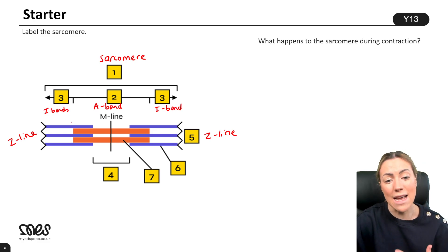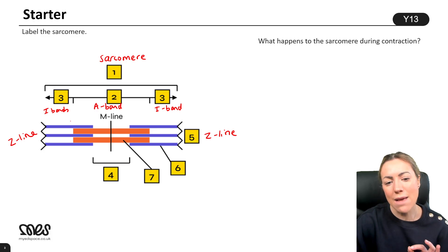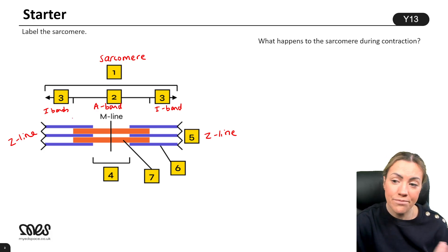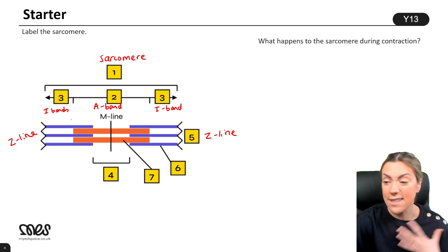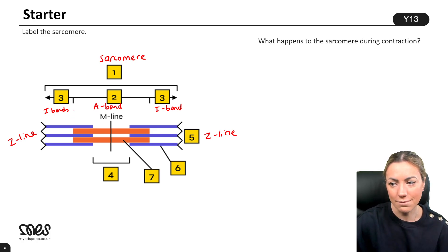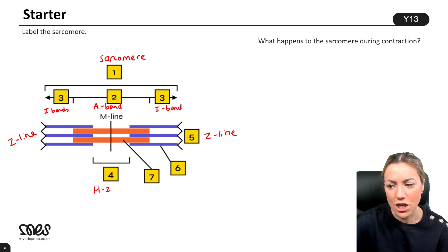The I-bands consist of actin only, so they appear lighter under the microscope because actin is thin — in the I-bands there are only actin thin filaments. In the centre of the A-band you've got a region known as the H-zone.